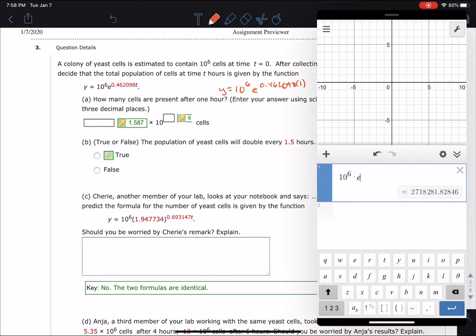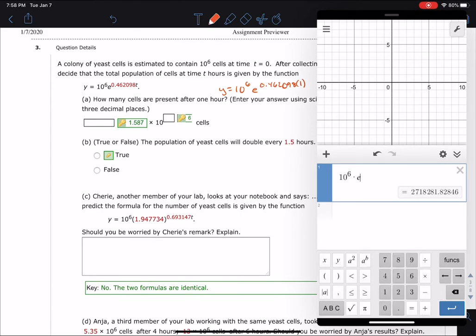The exponential number e raised to the 0.462098 times 1, parentheses, times 1. And I should have 1.587 times 10 to the 6th cells.